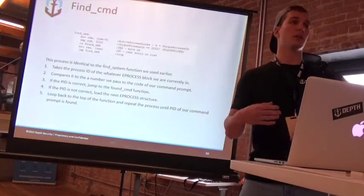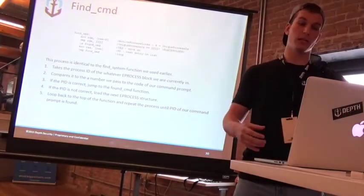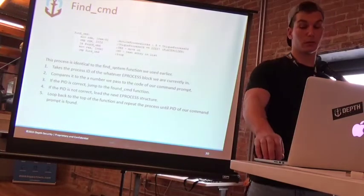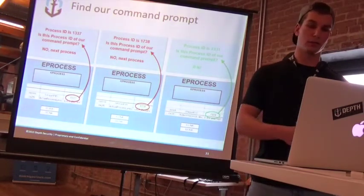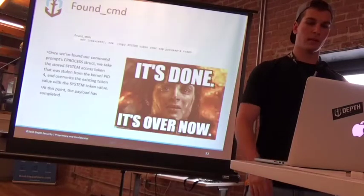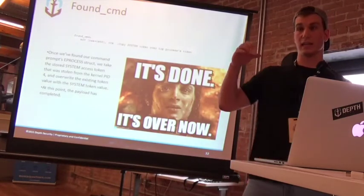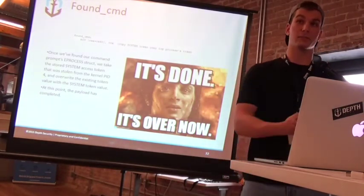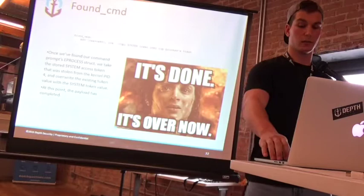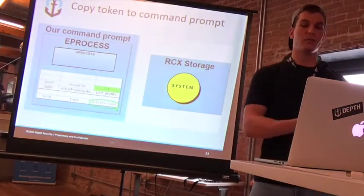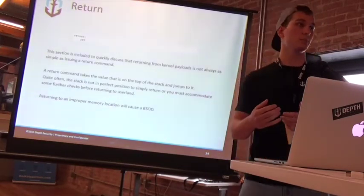When I first start the initial exploit, I spawn a command prompt and dynamically dump that process ID into the shellcode. We do the same thing we did when we found the system process, but now we're looking for our actual command prompt. Is this the process ID of our command prompt? No. Keep going until you find it. Finally we find the command prompt. We take the value we had in RCX — that system access token — and shove it into the command prompt we currently have. We take that system token, overwrite our low-privilege token with it, and hopefully we have a system-level access command prompt.